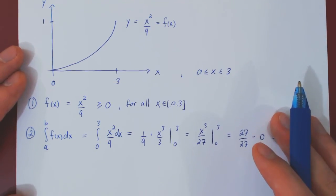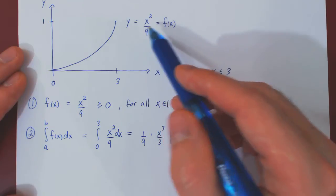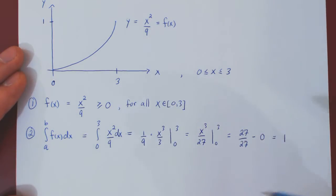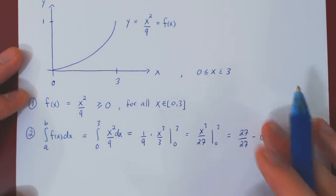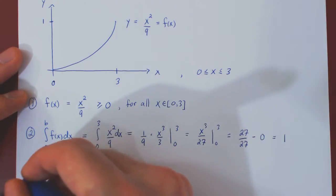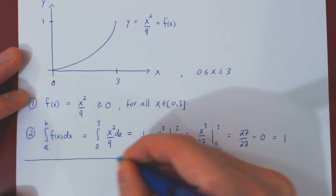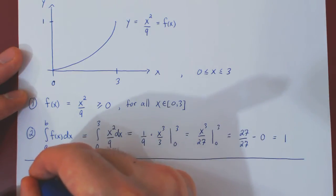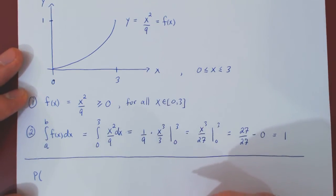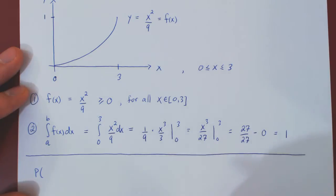And now that we have a probability density function for x on 0 to 3, we can find corresponding probabilities. So here we're going to ask, in part 2, what is the probability that x lies, say, between 1 and 2?